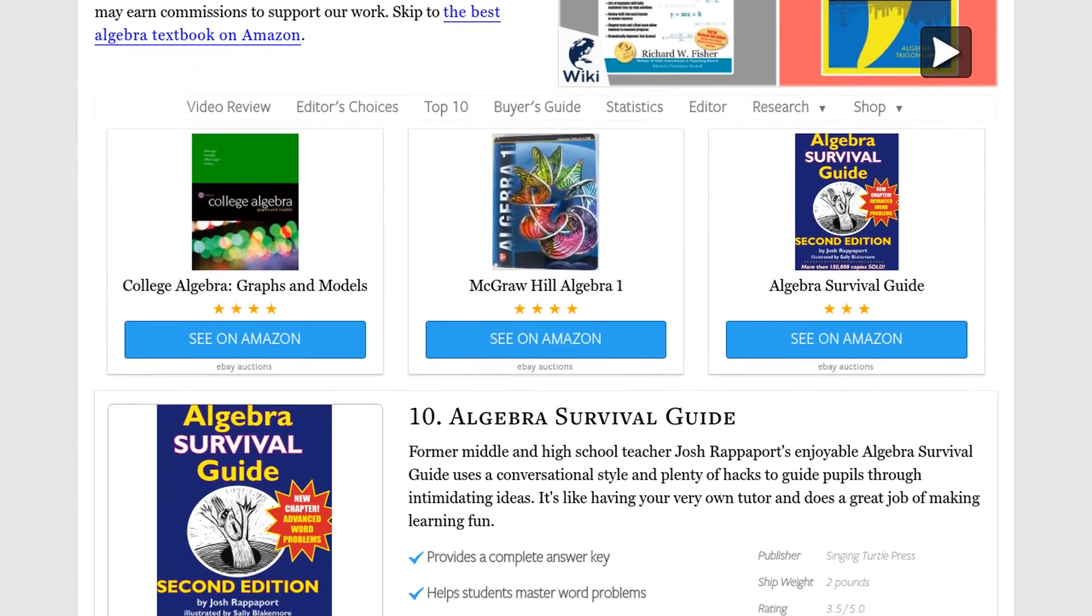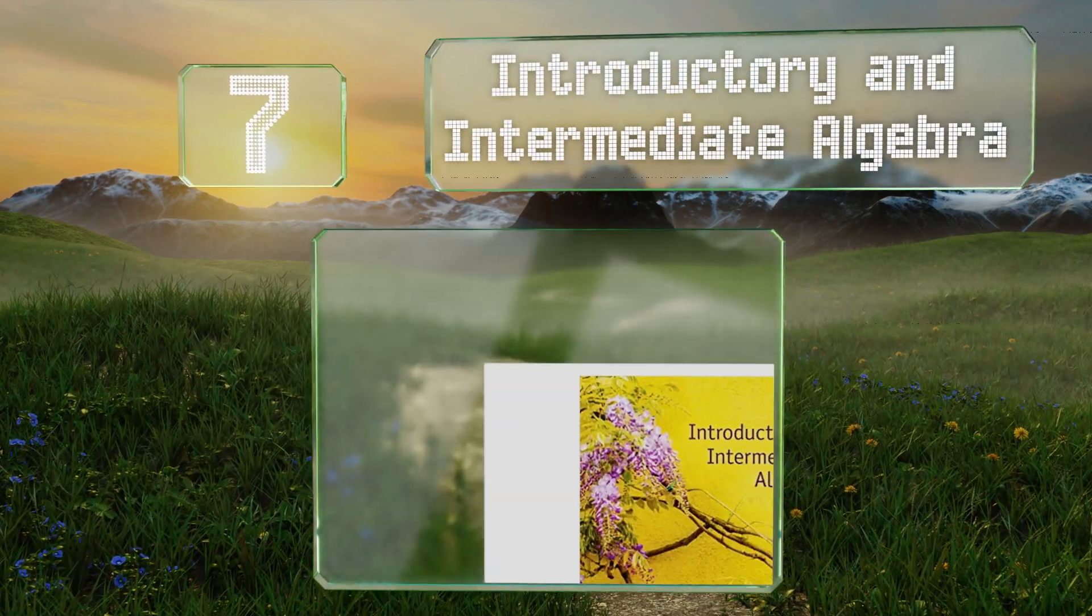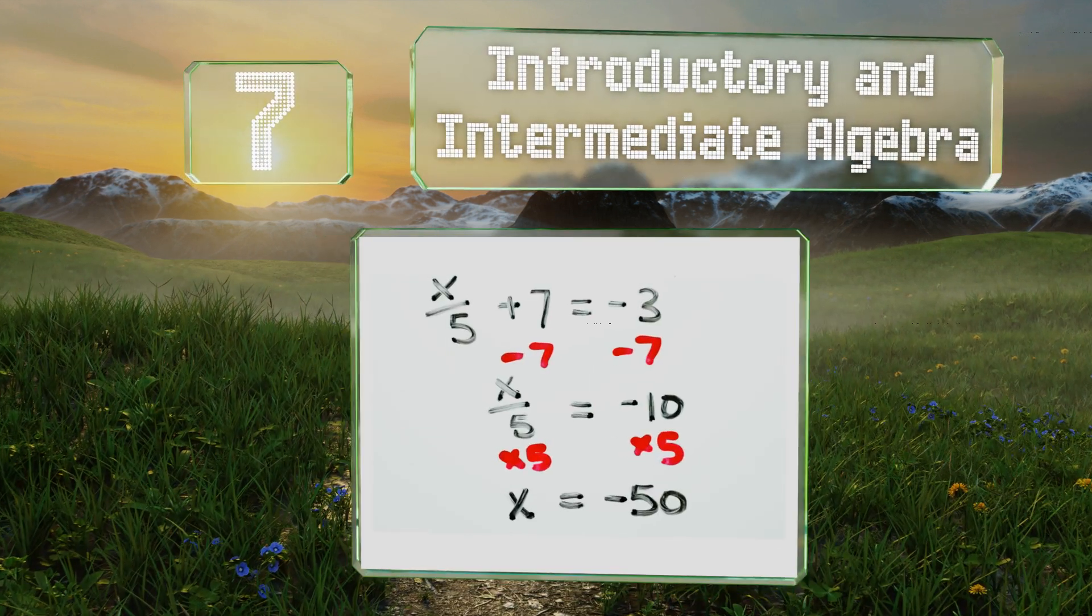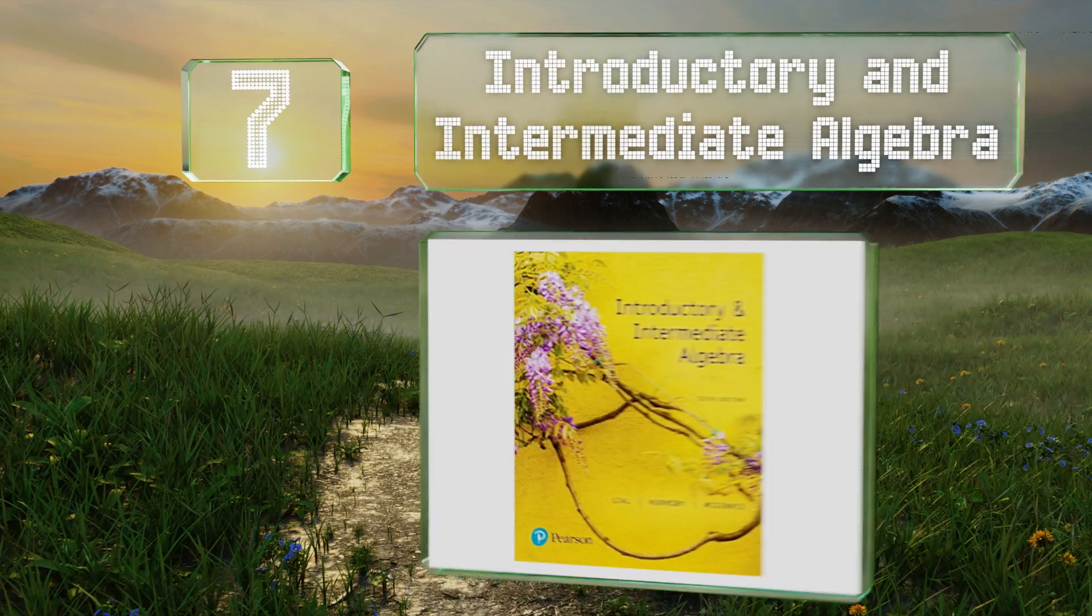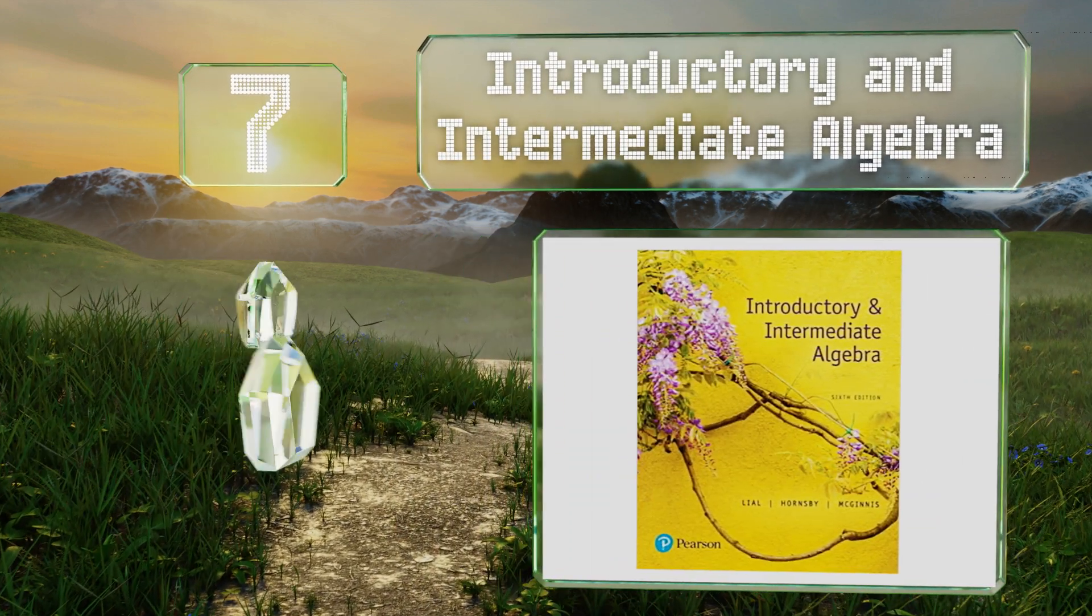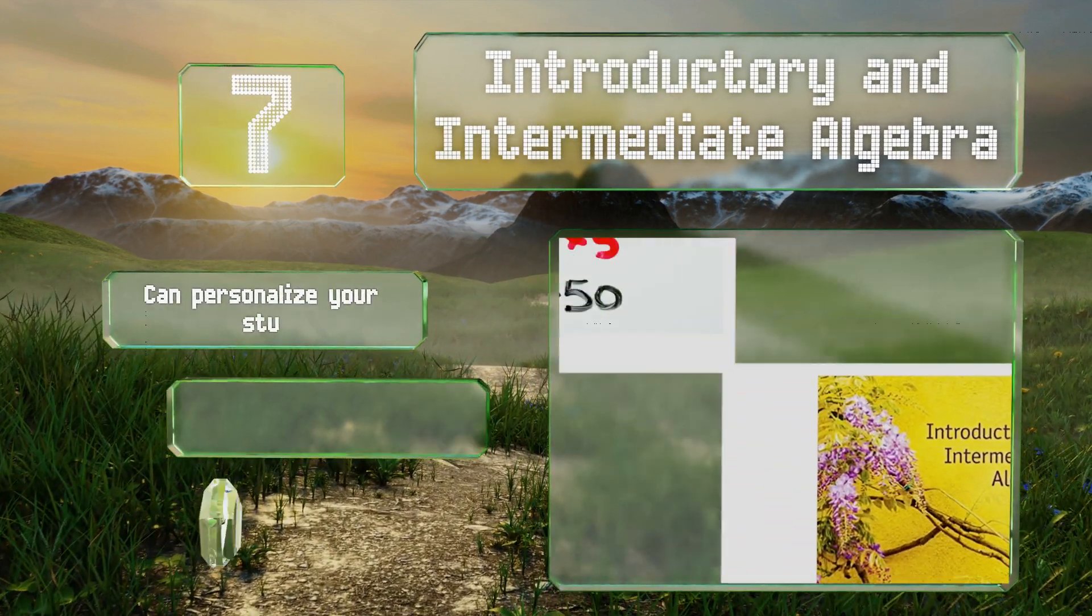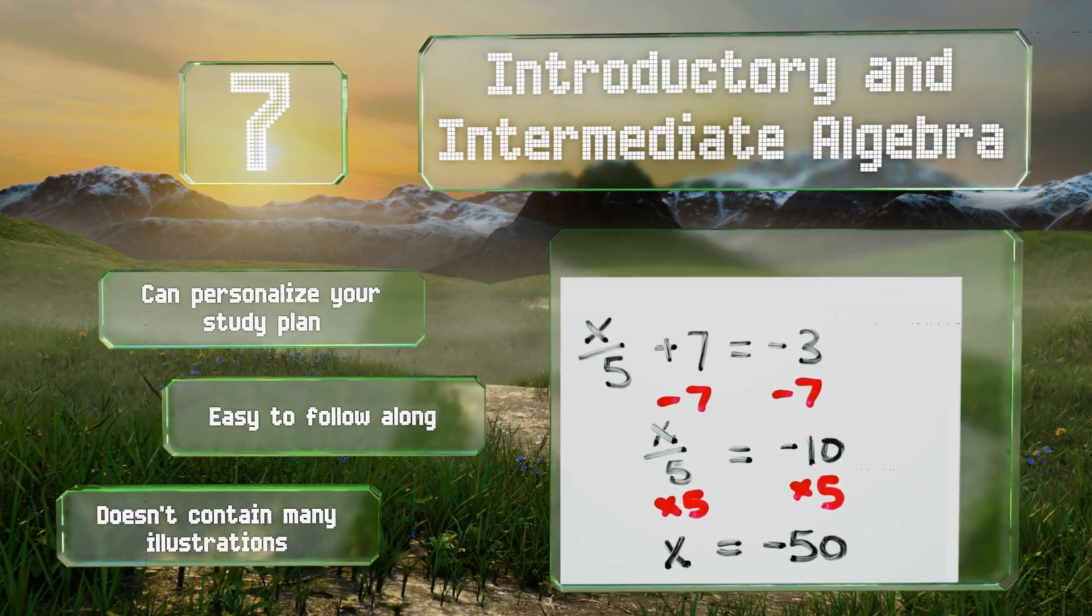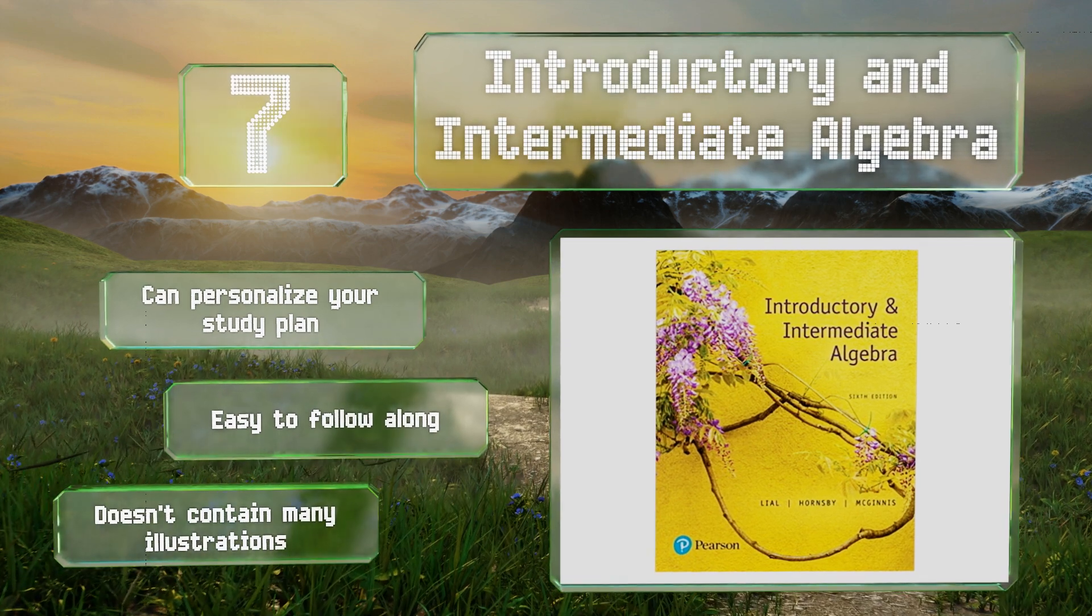At number seven, Introductory and Intermediate Algebra gives a great overview of the basics and then goes more in-depth, making it good for a wide range of learners, even those with limited starting knowledge. It's well organized with thorough explanations and examples. You can personalize your study plan and it's easy to follow along, but it doesn't contain many illustrations.